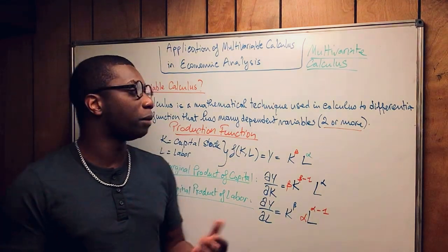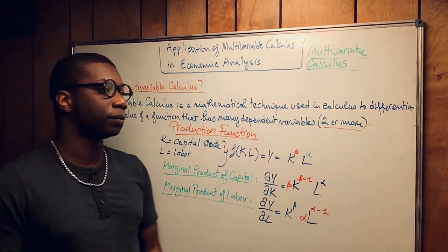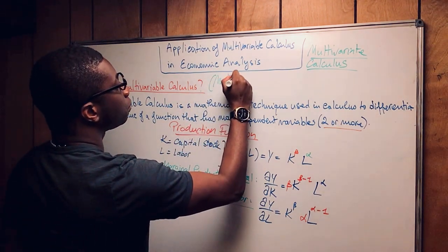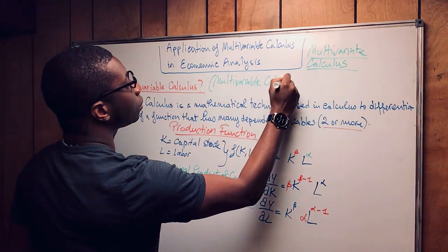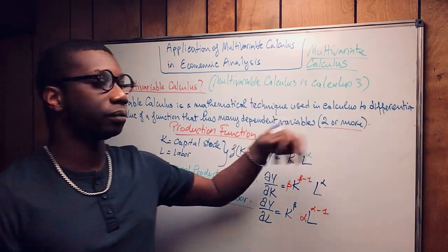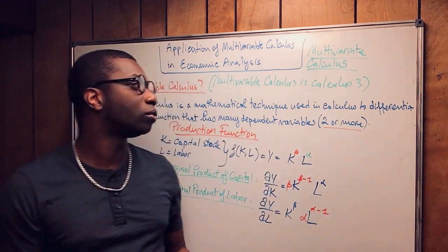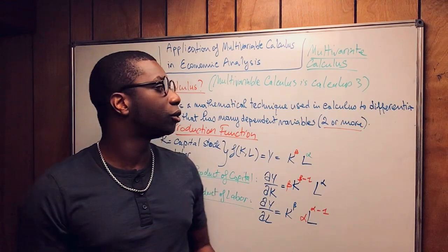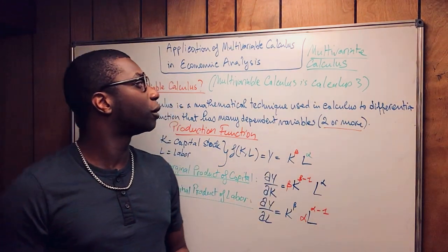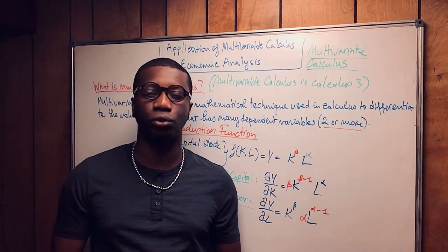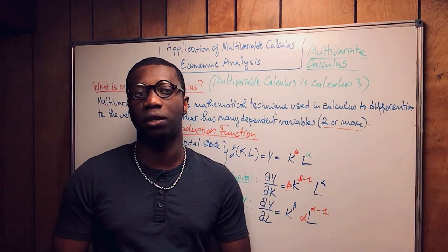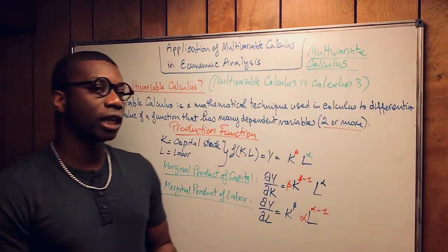That was it for today — let me know in the comments what you think. Multivariable calculus is relatively easy to understand. This is calculus 3. You need to know calculus 1, all the rules of differential calculus, and a little bit of integration from calculus 2 in order to do multivariable calculus. There are many tutorials on YouTube about partial derivatives, and once you understand partial derivatives, it becomes fairly easy. Thank you for watching — I'll see you next time.